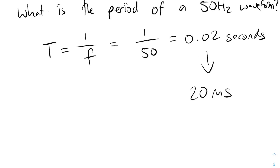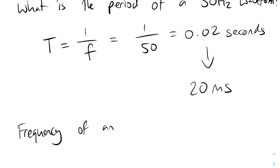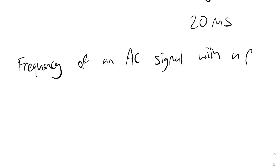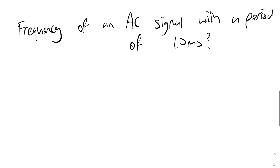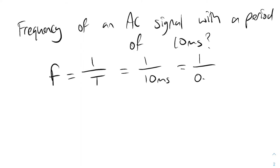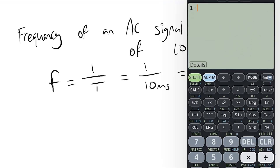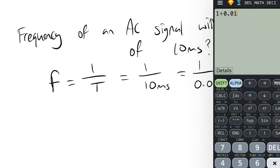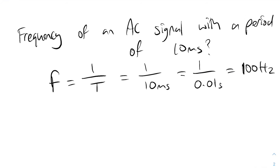Let's find the frequency of an AC signal with a period of 10 milliseconds. Frequency equals 1 over the period. The period is 10 milliseconds, which we enter as 0.01 seconds into the calculator. 1 divided by 0.01 gives us 100. So the frequency is 100 hertz — meaning an AC signal with a 10 millisecond period completes one cycle every 10 milliseconds and has a frequency of 100 hertz.